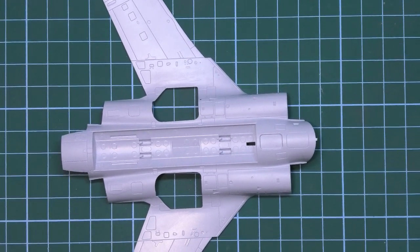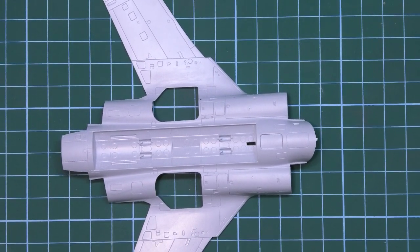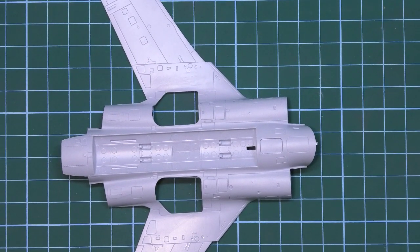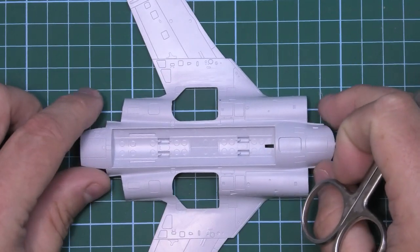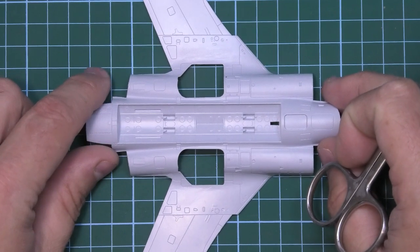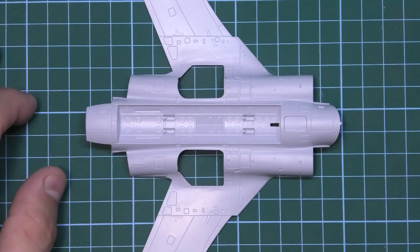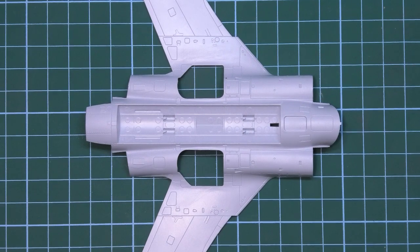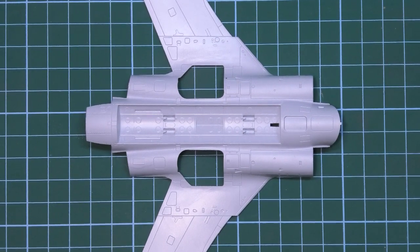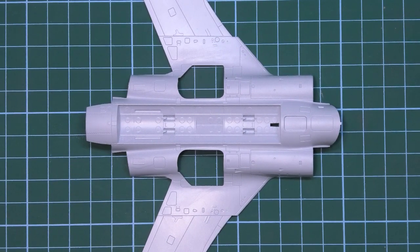So this is the underside part of the Airfix Buccaneer from a couple years ago, the 72nd scale one. Now when the Buccaneer was originally designed, the S in the designation S1, S2 stands for strike, which indicates in British parlance that the Buccaneer's primary role was that of a nuclear bomber.